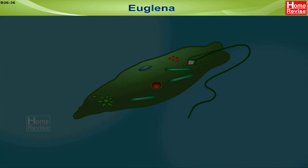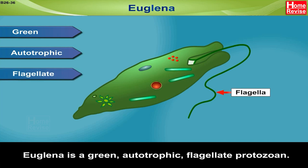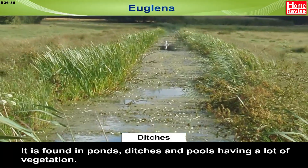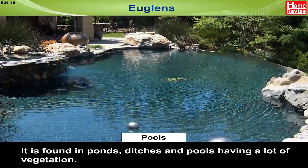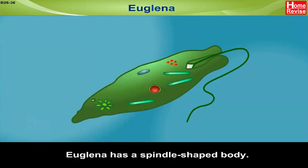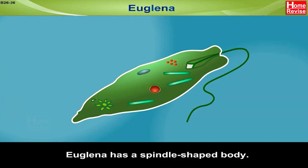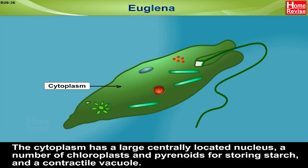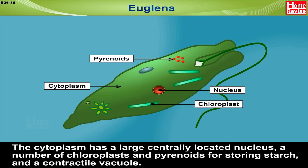Euglena is a green, autotrophic flagellate protozoan. It is found in ponds, ditches and pools having a lot of vegetation. Euglena has a spindle-shaped body. A whip-like flagellum arising from its anterior end helps in locomotion. The cytoplasm has a large centrally located nucleus, a number of chloroplasts and pyrenoids for storing starch, and a contractile vacuole.